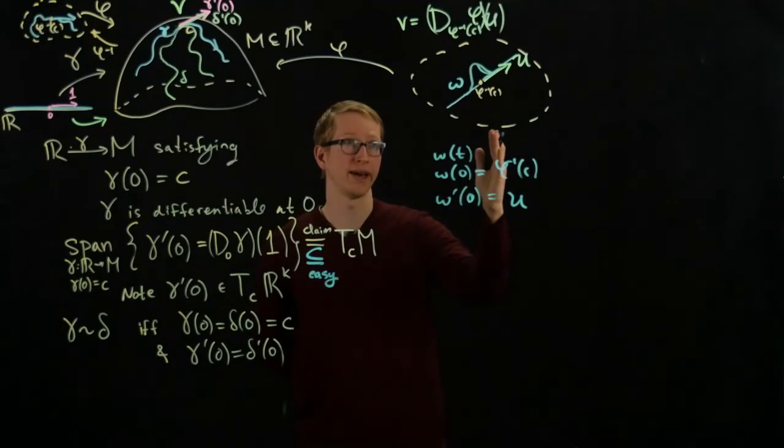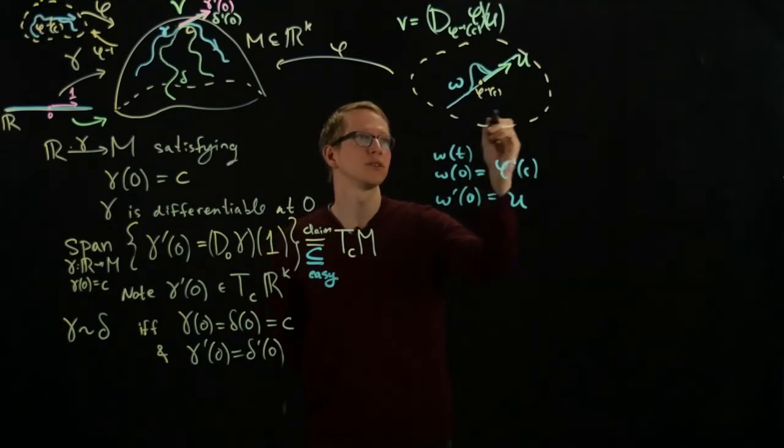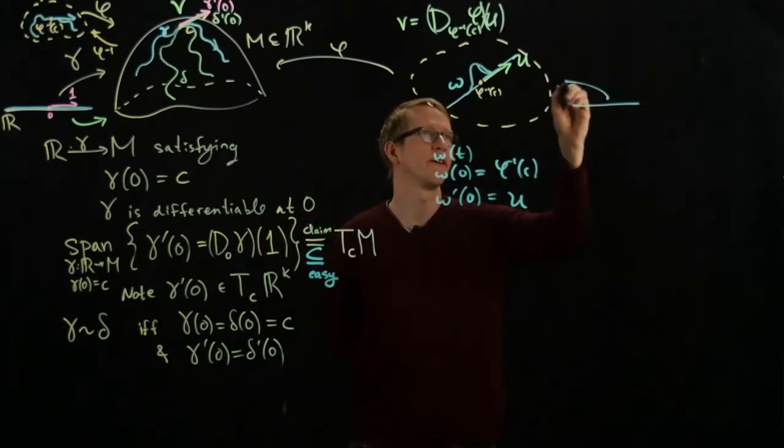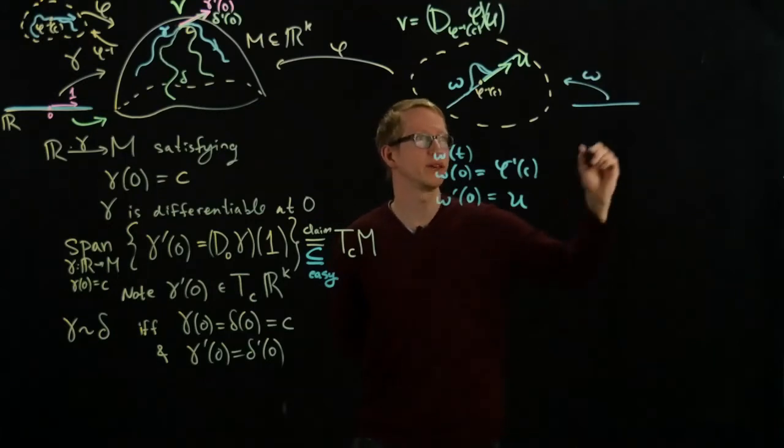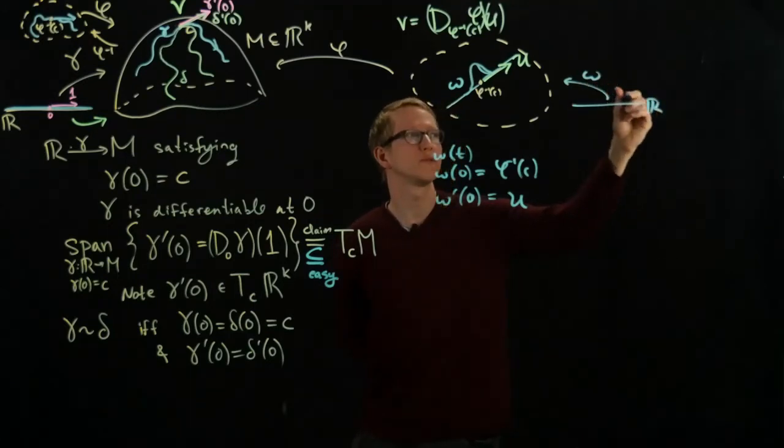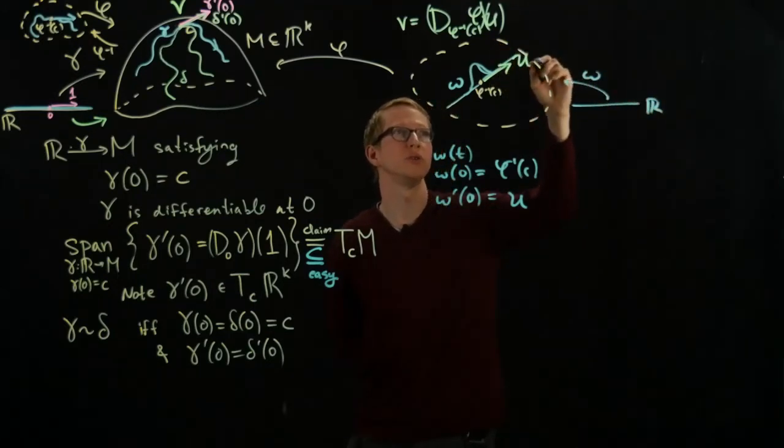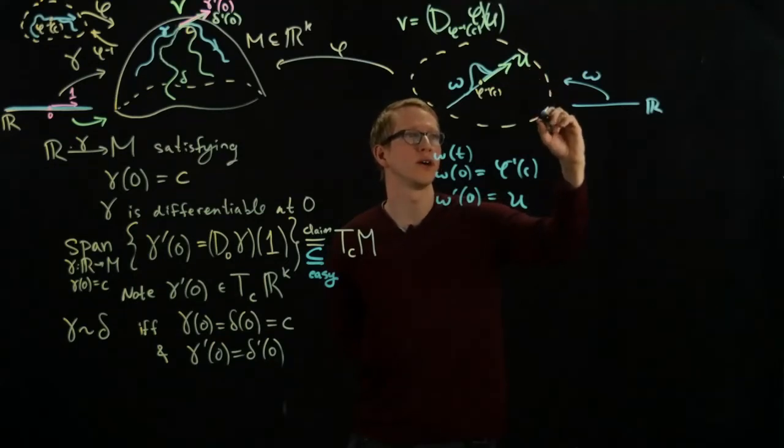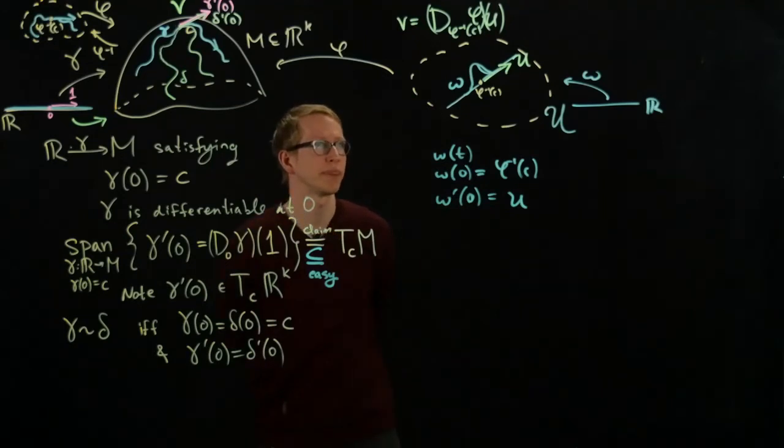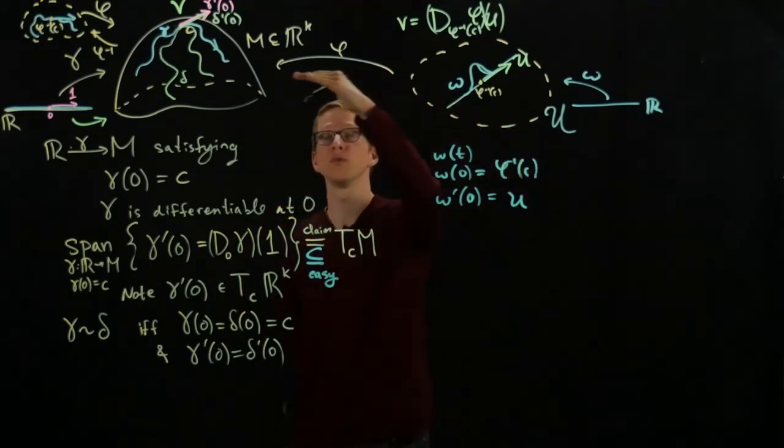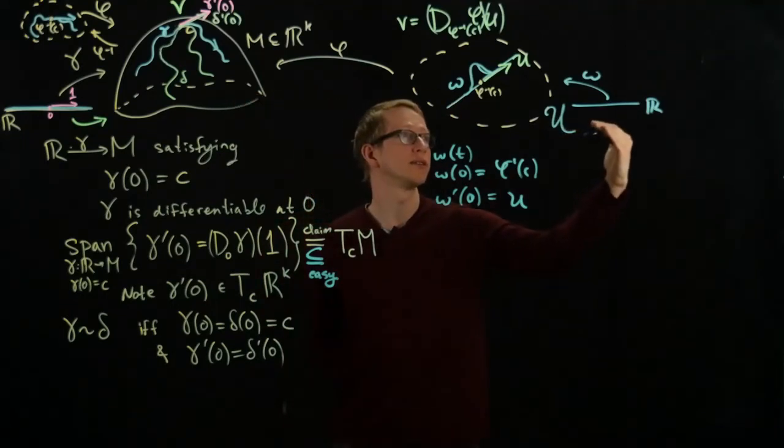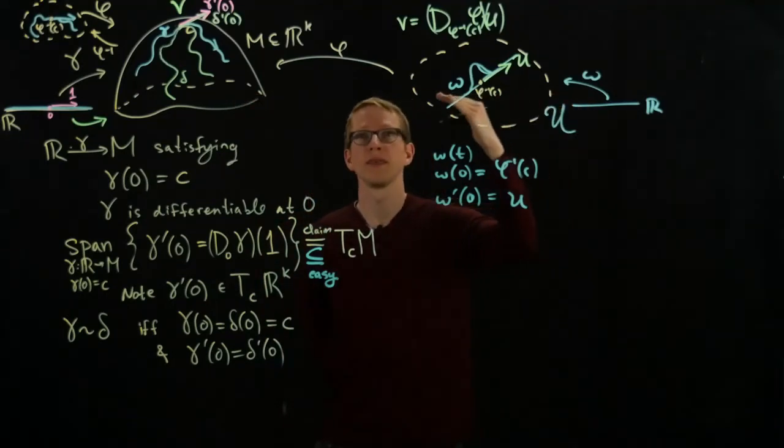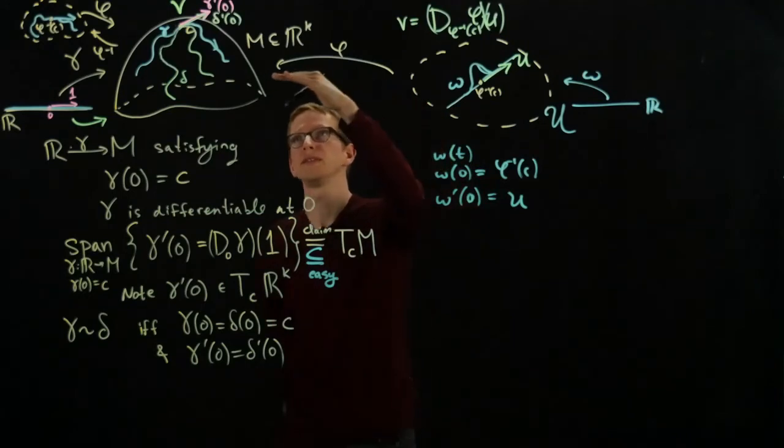But now that we have such a path, what we can do is, so this gives us a path here. That's the path omega. And omega goes from R to U. I hope that that notation is not too confusing. Let me draw big U a little bit more larger. That's the open set. And then we can compose with phi. This is differentiable by construction. This is differentiable.